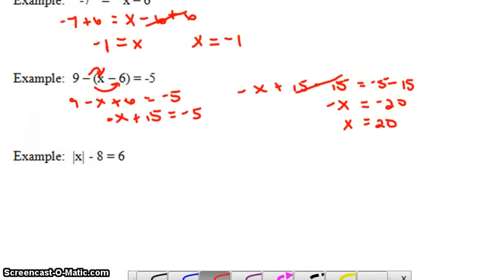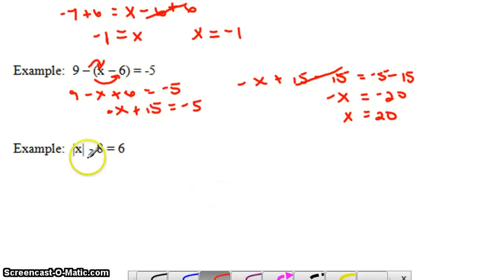This last one involves absolute value. We want to get x by itself, just like in all the other equations. To get x by itself, I'm going to do the opposite of subtract 8 to both sides, which is add 8.